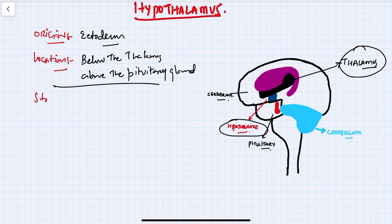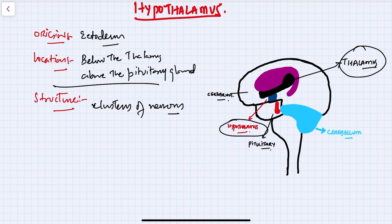The structure of the hypothalamus is very important. The hypothalamus is a very complex structure made up of various nuclei, or clusters of neurons. These nuclei are responsible for different functions including regulating body temperature, hunger, thirst, sleep, and the release of hormones. It is connected with the anterior lobe of the pituitary gland via the hypophysical portal blood vessels.